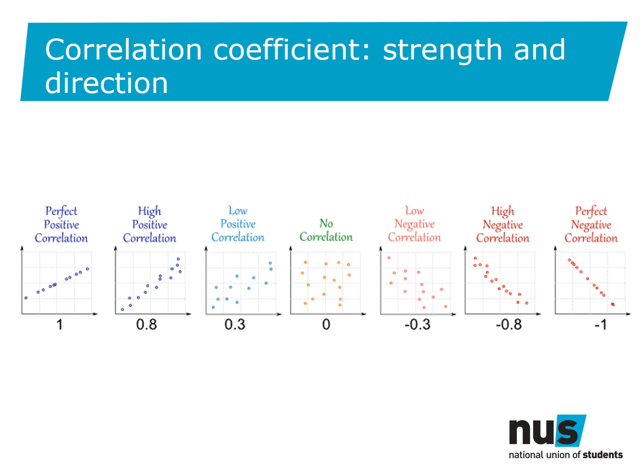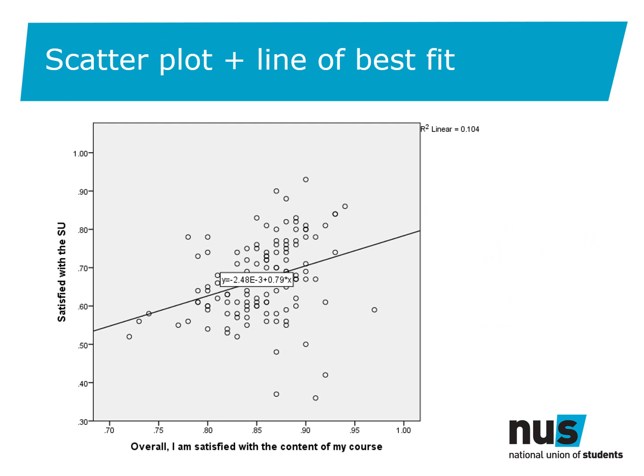A correlation coefficient is a way of assigning a numerical value to the association we see on a scatterplot. Strong positive correlations mean that as one variable increases, the other also increases at the same rate. The nearer to zero the coefficient, the less association there is between the two variables. We can illustrate a correlation using a line of best fit — the steepness of the line shows the strength of the correlation and its direction indicates whether the correlation is positive or negative.